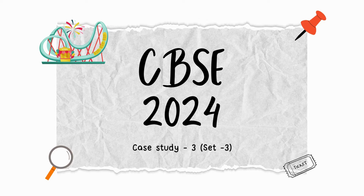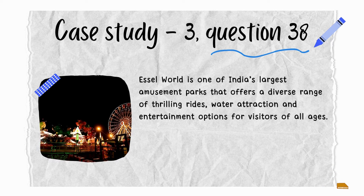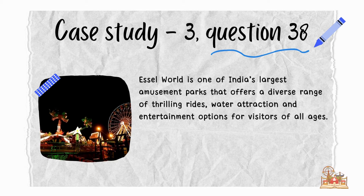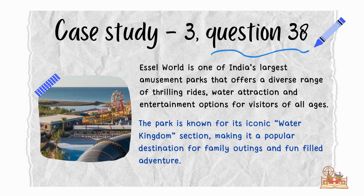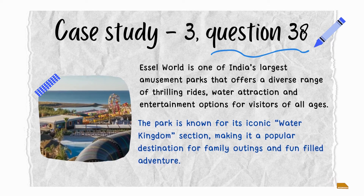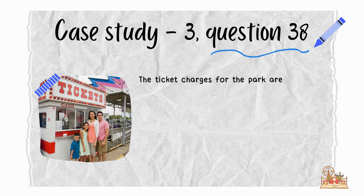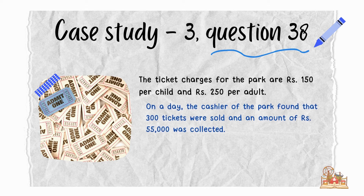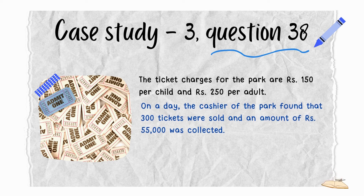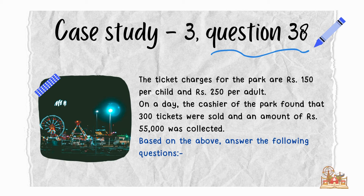Let's see case study 3 from CBSE board exam 2024, set 3. SL World is one of India's largest amusement parks, offering a diverse range of thrilling rides, water attractions, and entertainment options for visitors of all ages. The park is known for its iconic water kingdom section. The ticket charges are rupees 150 per child and rupees 250 per adult. On a day, the cashier found that 300 tickets were sold and an amount of rupees 55,000 was collected.